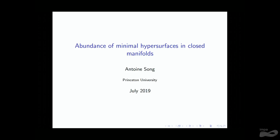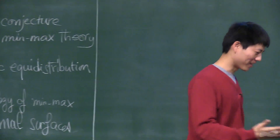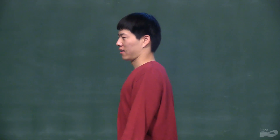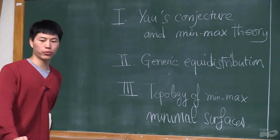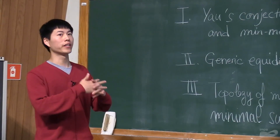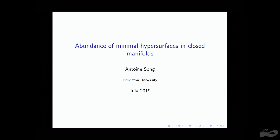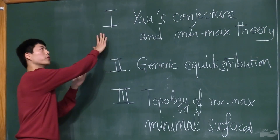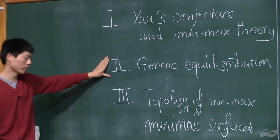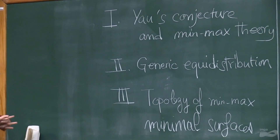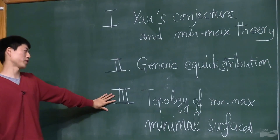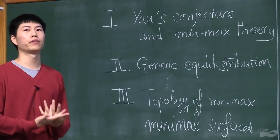Thank you for the very nice words. It's my first time at IMPA, and I'm very excited. I have to thank my now former advisor for not being here — so thank you, Fernando. My goal today is to talk about some recent advances on the theory of existence of minimal surfaces. The outline: first I'll introduce Yao's question and ideas from min-max theory, which is the theory that enables you to construct minimal surfaces. Then I'll talk about the generic equidistribution results we obtained with Fernando and André, and finally, if I have time, about the topology of these minimal surfaces.